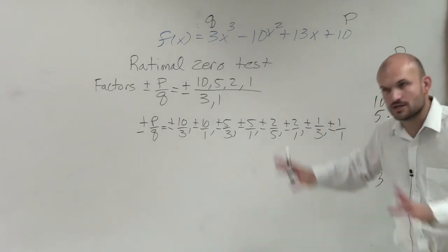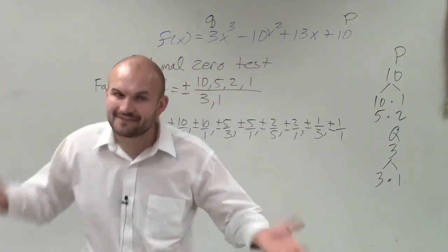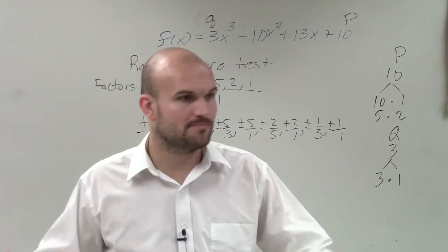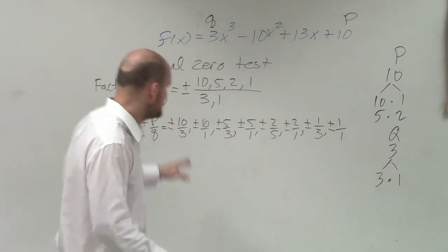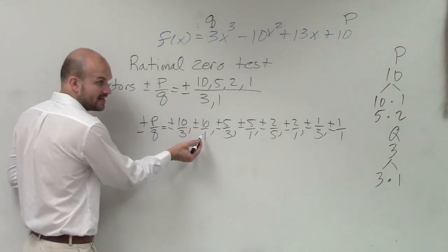So what this is telling us, all the rational zeros test tells us is if we have a rational number as a zero, if we have a rational number. Integers are rational numbers. See, the number 10 can be written as 10 over 1.